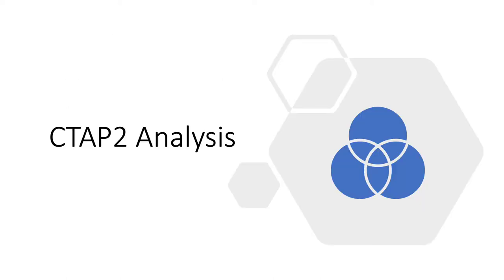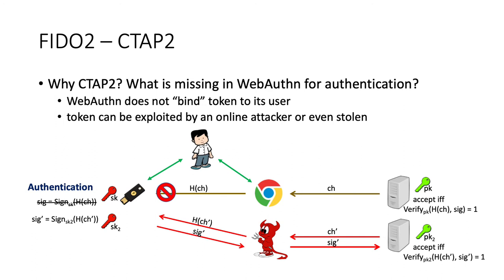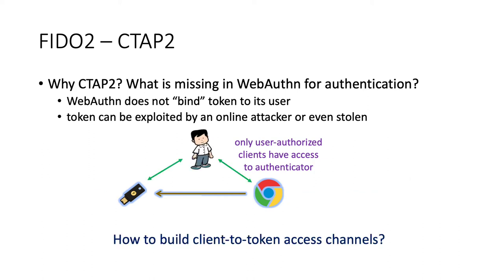That's all for the WebAuthn analysis. Now let's look at the more complicated protocol, CTAP2. Before showing our analysis, let's take a look at why we need CTAP2 — what's missing in WebAuthn. Basically, WebAuthn guarantees a successful authentication is always bound to the registered token, but this may not be bound to the user who owns that token. This makes it possible for an attacker to exploit the user's token to log in to another server on behalf of the user — the attacker just blocks the honest challenge sent to the token and replaces it with a malicious one, either through an online attack or by stealing the token. That's why we need to establish client-to-token access channels such that only the user-authorized client can have access, and we need the help of the user to bind the token to its owner.